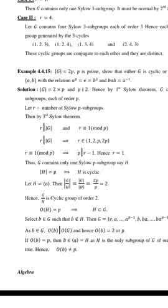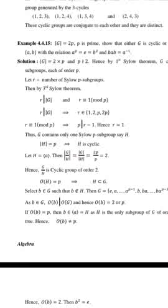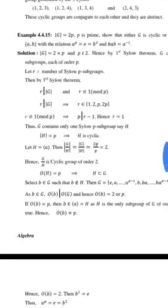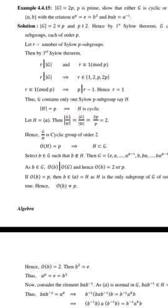Hence R equals 1. Thus G contains only one Sylow P-subgroup, say H. The order of H equals P, so H is cyclic. Let H equal the cyclic group generated by A. Then the index of H in G equals the order of G divided by the order of H, which is 2P divided by P, equals 2. Hence G divided by H is a cyclic group of order 2.